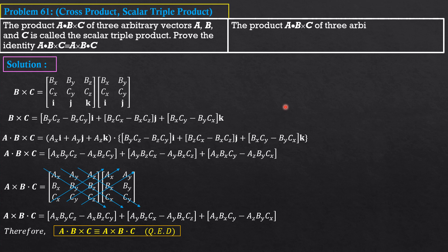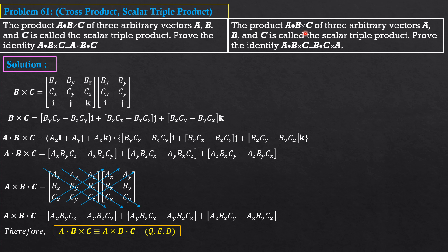For your part: since I've already evaluated A·(B cross C), all you have to do is determine the scalar triple product B·(C cross A) and show that they are equal. This completes the proof of the cyclic property of the scalar triple product.